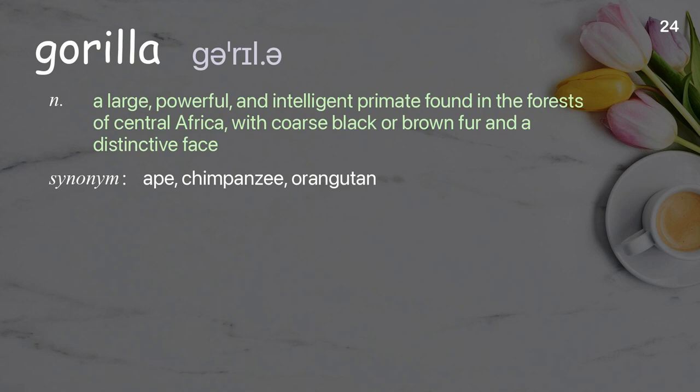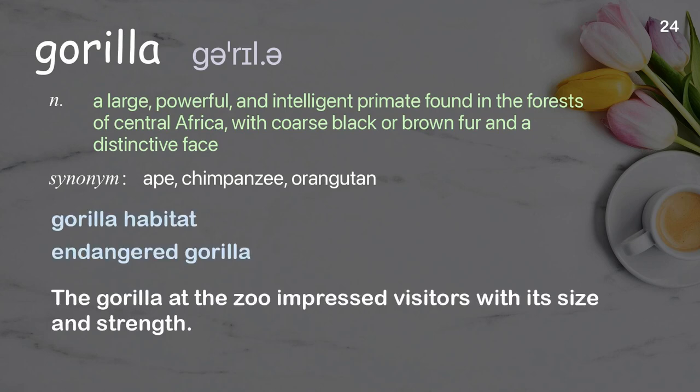Gorilla: a large, powerful, and intelligent primate found in the forests of Central Africa, with coarse black or brown fur and a distinctive face. Examples: gorilla habitat, endangered gorilla. The gorilla at the zoo impressed visitors with its size and strength.